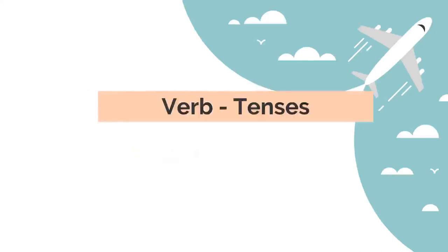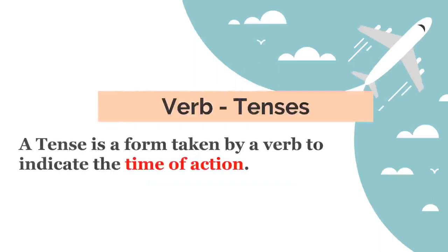What are verb tenses? Verb tenses are nothing but the time of an action. It is a form taken by a verb. A verb takes a particular structure or form and it indicates the time of action. So when we speak, we have to see what is the time of action that was performed and accordingly we should use the tenses. Verb tenses are that form of verb that indicates the time of action.